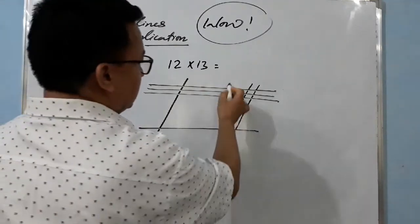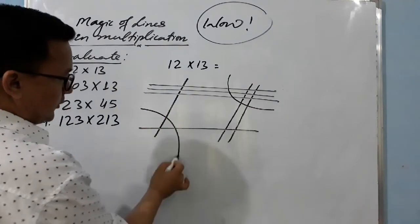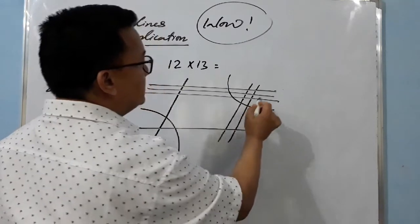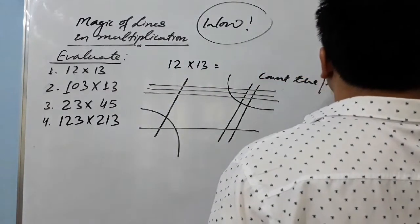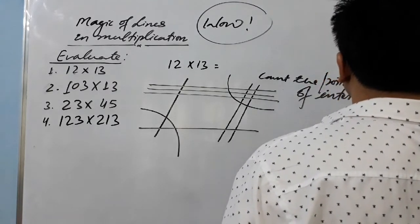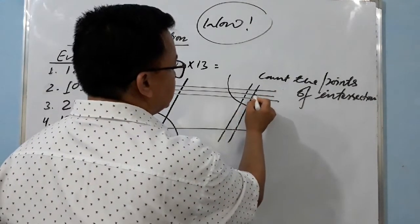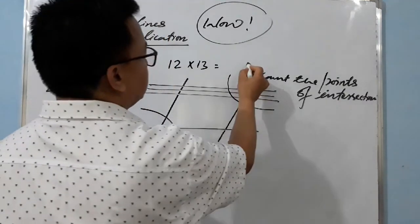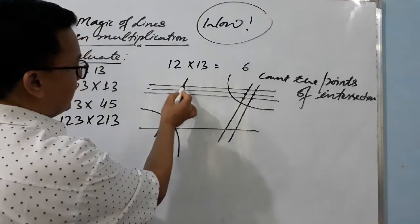Now, how to count: you group the intersections on this side, and you count the points of intersection of the lines. Here — one, two, three, four, five, six. This gives you the unit digit: six.